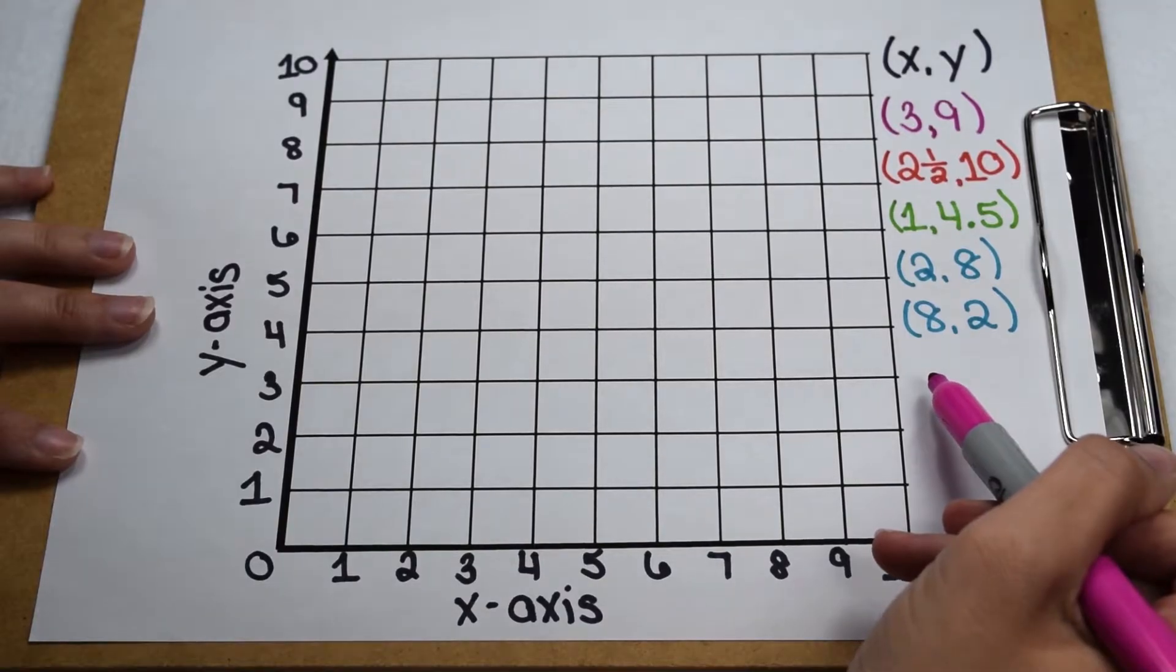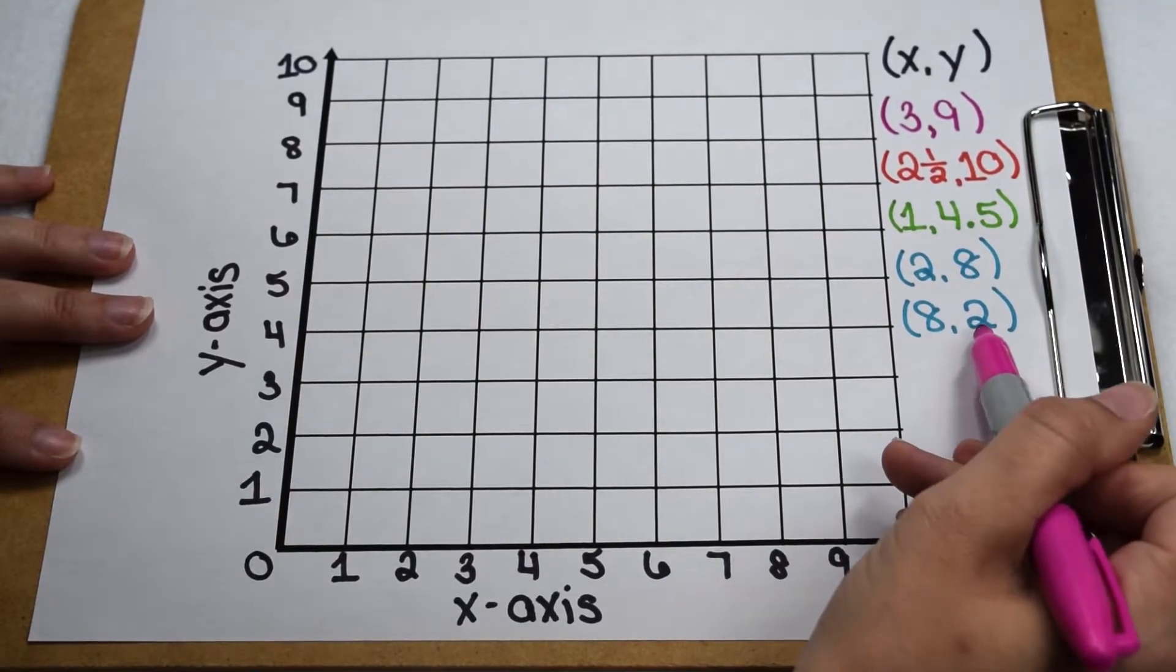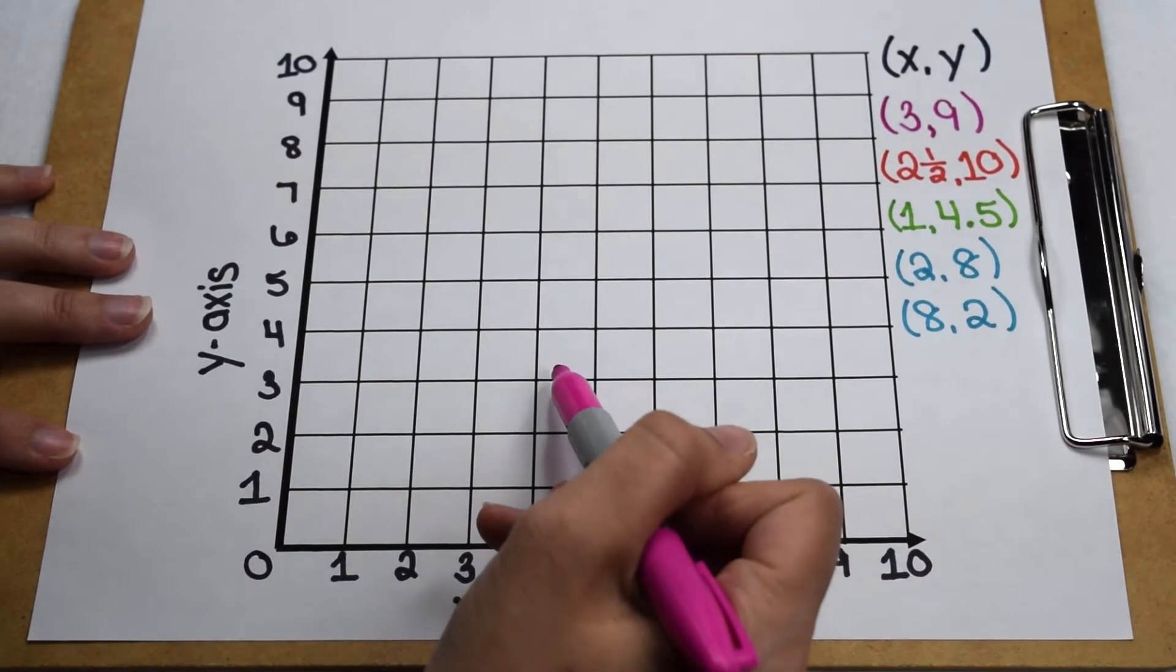When we're working with a coordinate plane, one of the main skills we need is to be able to plot points on it. In order to do this, we need to understand the information our ordered pair is giving us and transfer this information onto our coordinate plane.